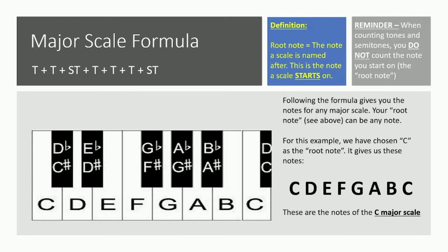So first of all we need to get some definitions clear. The root note, which is a very common term in scales and harmonies, is the note the scale is named after. In terms of melody, it's the note a scale starts on. So for all these examples we will always start with C for C major, and here's a reminder: when counting tones and semitones as I said in the previous lesson, you do not count the note you start on, aka the root note.